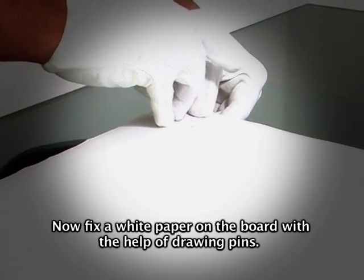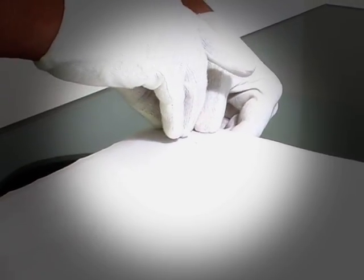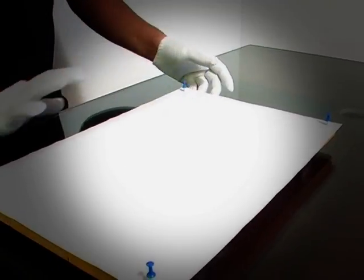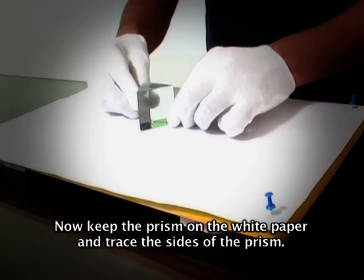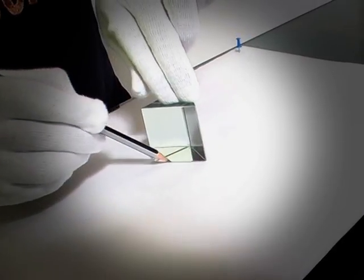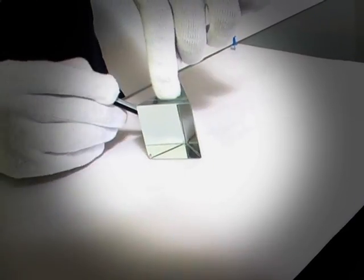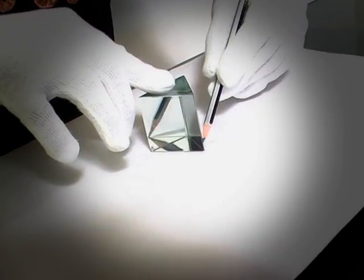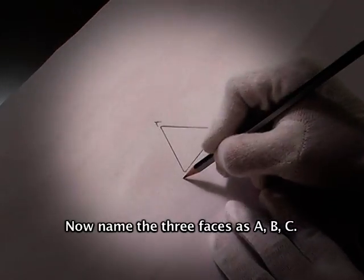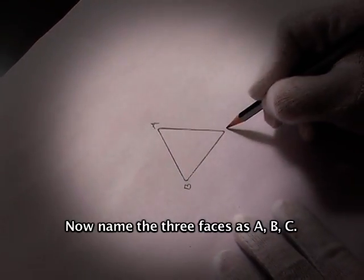Now fix a white paper on the board with the help of drawing pins. Keep the prism on the white paper and trace the sides of the prism. Now name the three faces as A, B, C.